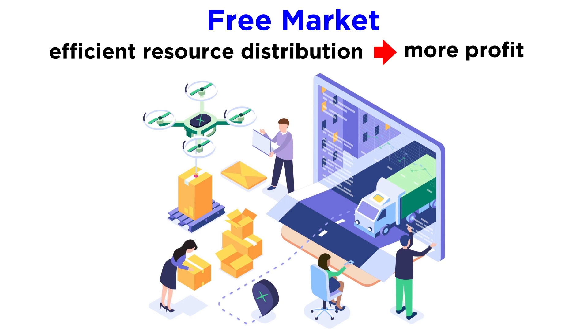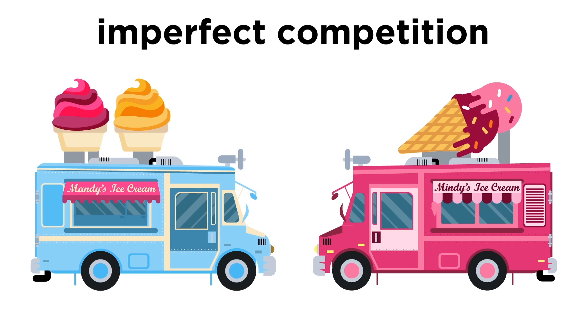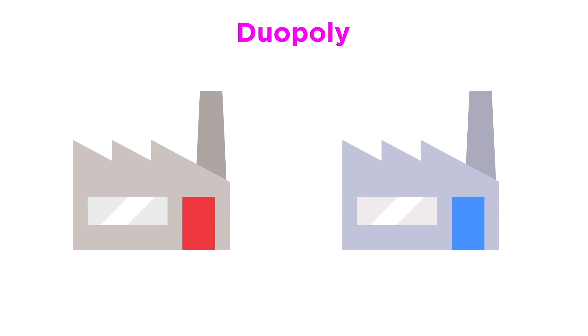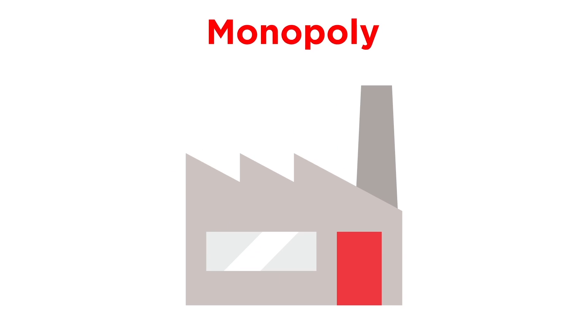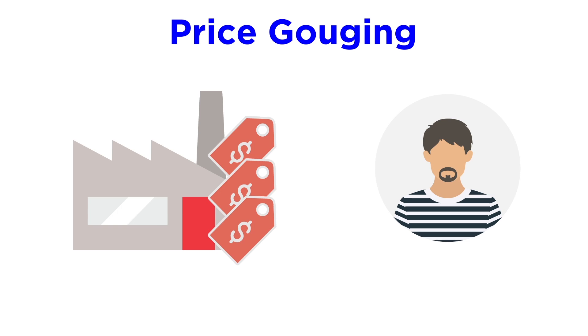Now, there are exceptions to the idea that free markets lead to an efficient distribution of resources. One problem is imperfect competition. If only a few companies are selling something, there might not be enough competition to lower market prices to the true equilibrium point. When only two companies dominate a market, it's called a duopoly. When only one company dominates a market, it's called a monopoly. Whenever a company charges customers too high of a price for goods or services, especially when demand is high and supplies are limited, it's called price gouging. In an uncompetitive market, price gouging is more likely to occur.